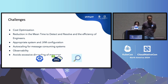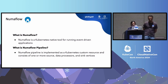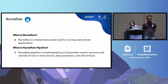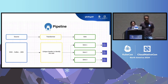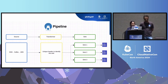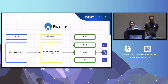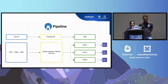Now let's take a look at what Numaflow is and what it has solved for us. Numaflow is a Kubernetes-native tool for running event-driven applications. A Numaflow pipeline is implemented as a Kubernetes custom resource and consists of one or more source, data processing, and sink vertices. We have implemented it with three vertices: the source, transformer, and the sink.